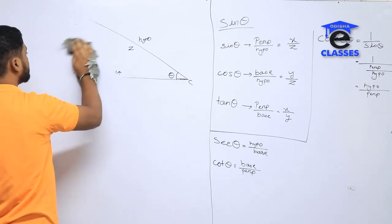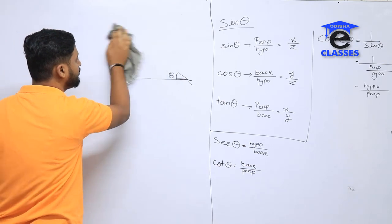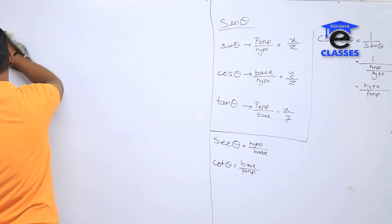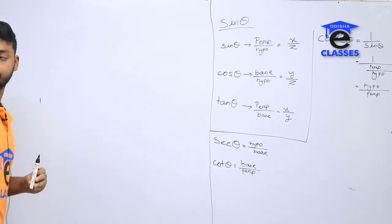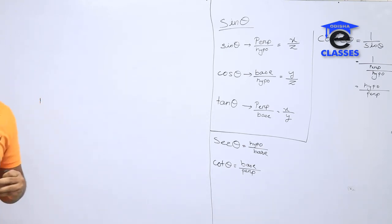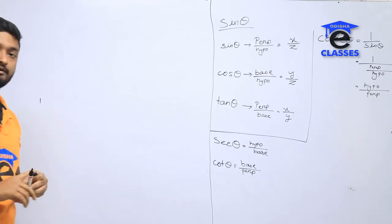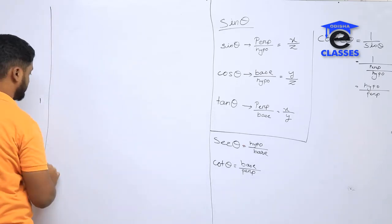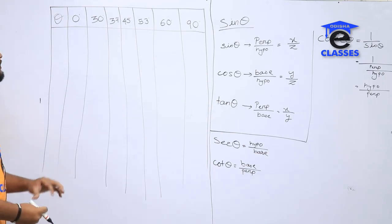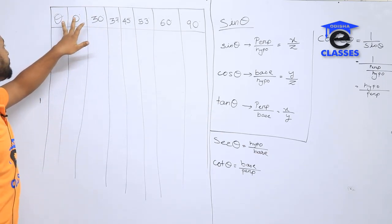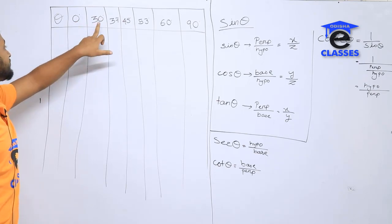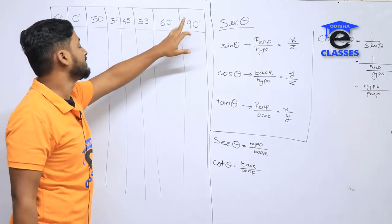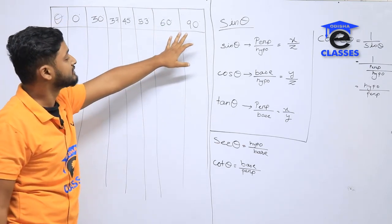This is a table. In this table, you can find the values. If you get a question, you can find the direct value and give a direct answer. The table lists angle values: 0 degree, 30 degree, 37 degree, 45 degree, 53 degree, 60 degree, and 90 degree. 90 degrees is the maximum angle value used in the triangle function.